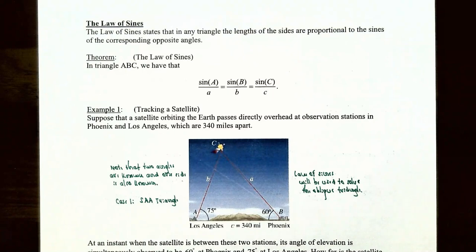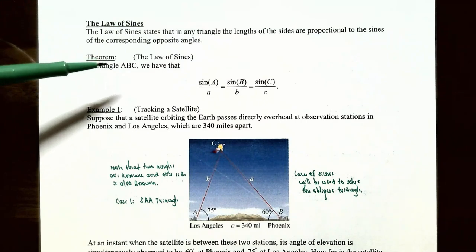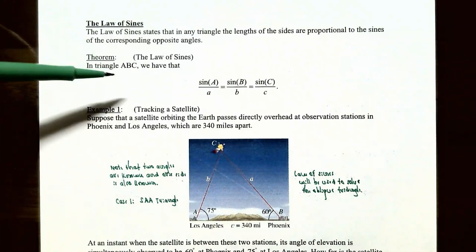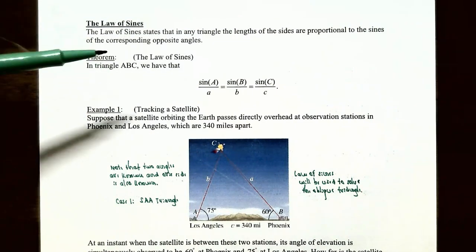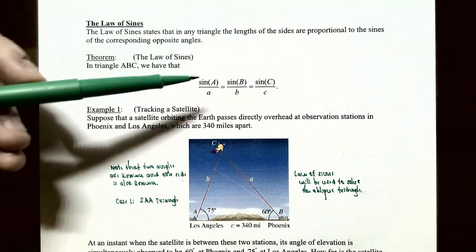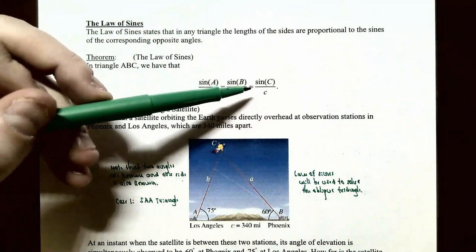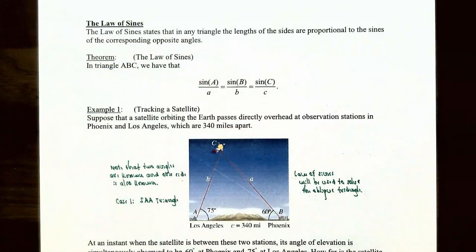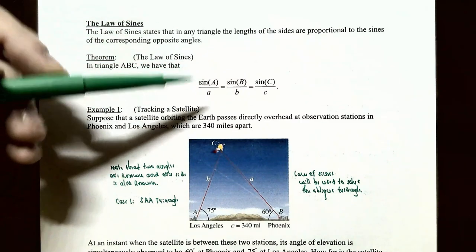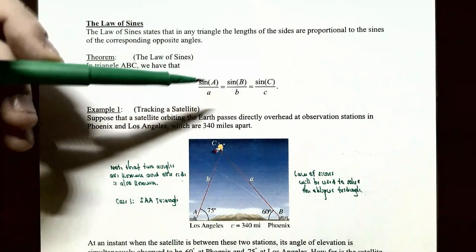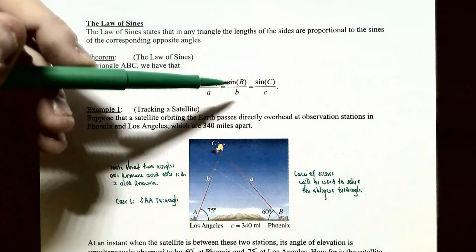The law of sines states that in any triangle, the lengths of the sides are proportional to the sines of the corresponding opposite angles. In triangle ABC, where side a is across from angle A, side b from angle B, and side c from angle C, we have: sin(A)/a = sin(B)/b = sin(C)/c. Three different proportions can be formed from this statement.